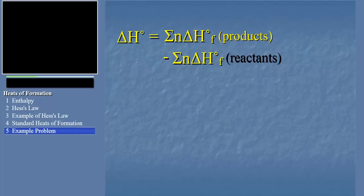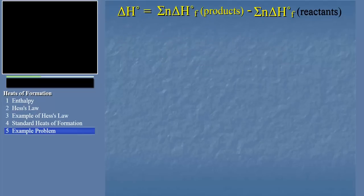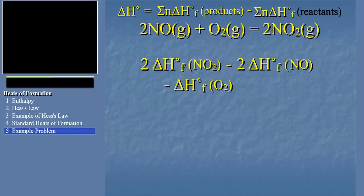So let's see how it works now. We'll use the following example to illustrate. Let's say we want to know the delta H0 for this reaction. The delta H0 for the reaction will equal 2 times the heat of formation of NO2, minus 2 times the heat of formation of NO, minus the heat of formation of O2.